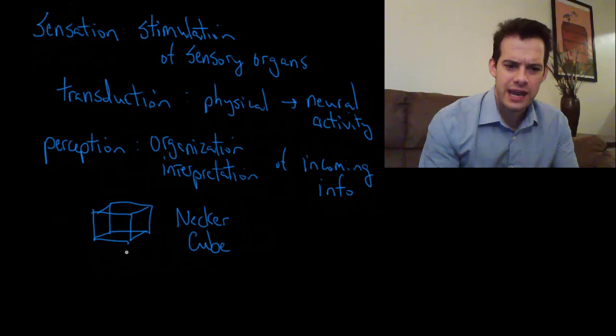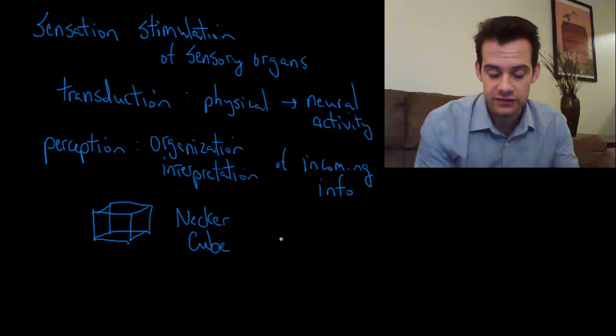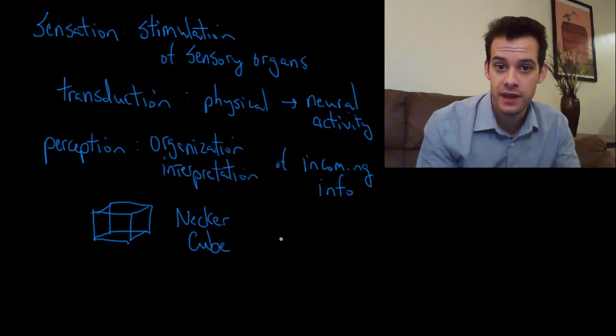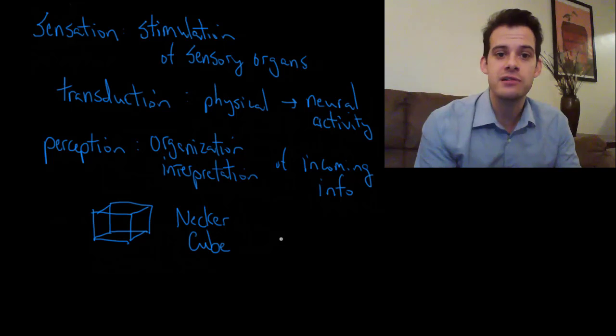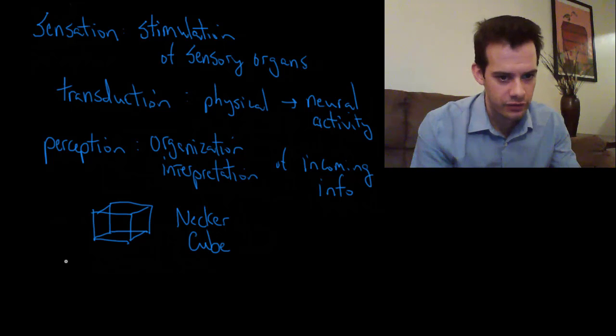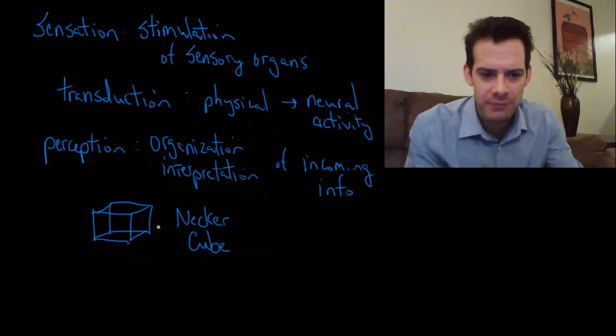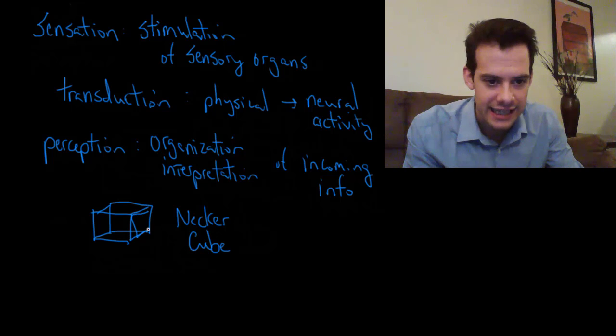This idea that we can perceive things in multiple ways opens up the possibility that we misperceive things and that we misinterpret them. But an important point is that we misinterpret things in predictable ways. When you look at this, I don't know if you're seeing this as the front panel or this as the front panel, but I can be pretty sure that you're not seeing this as the front panel.